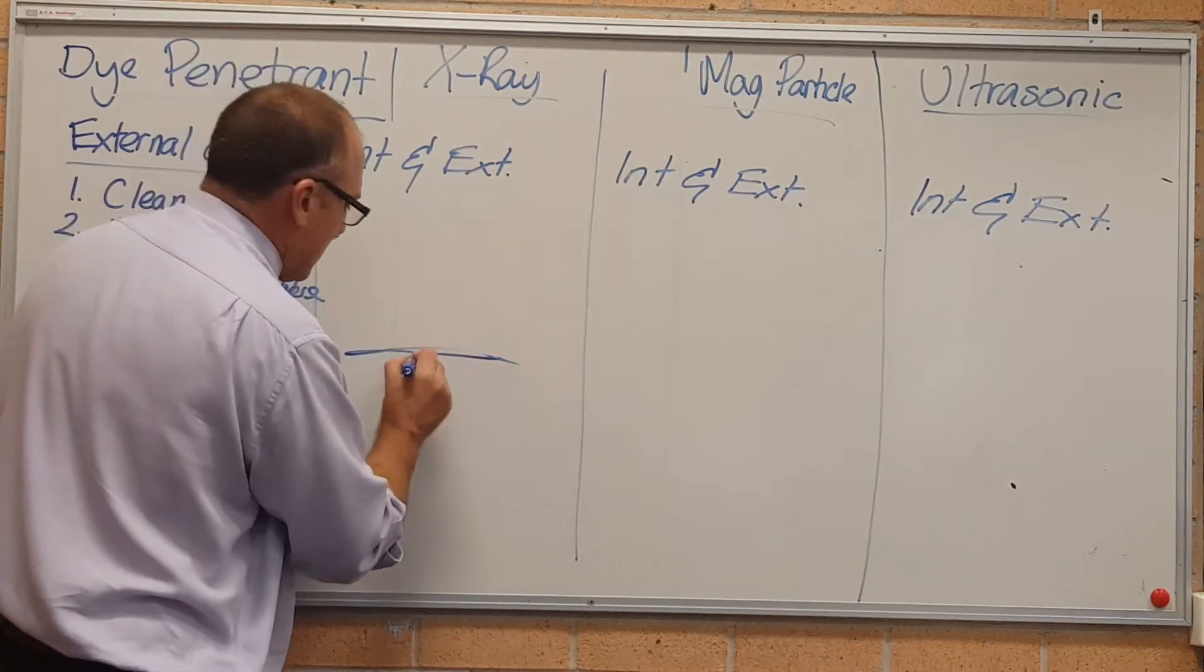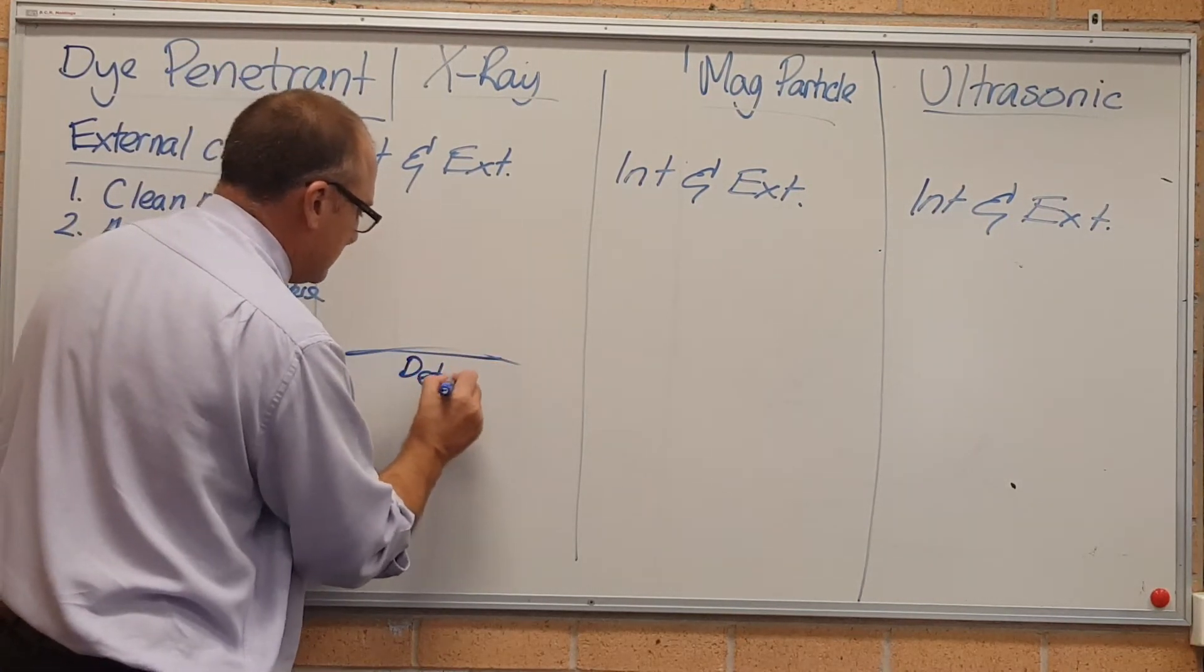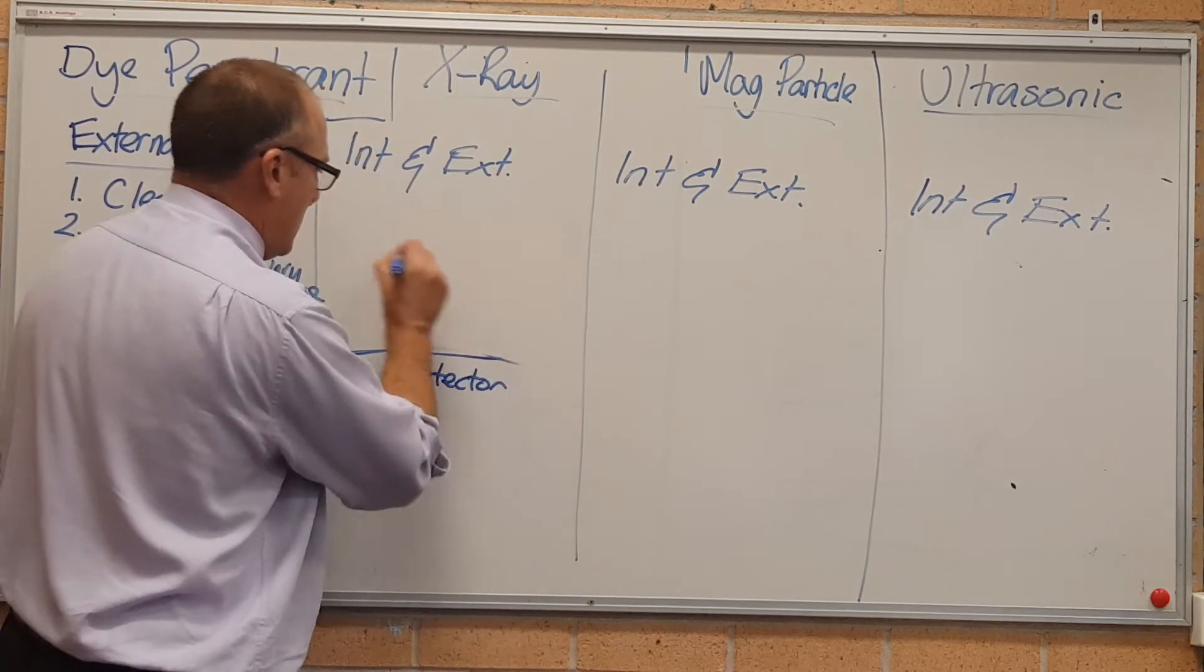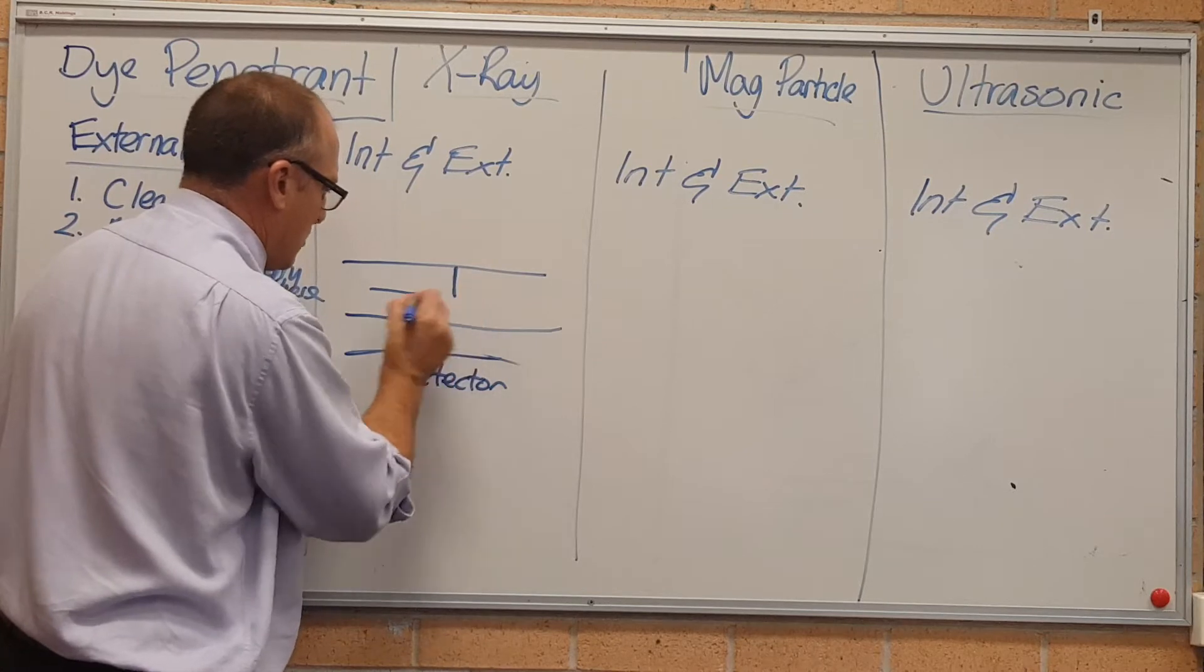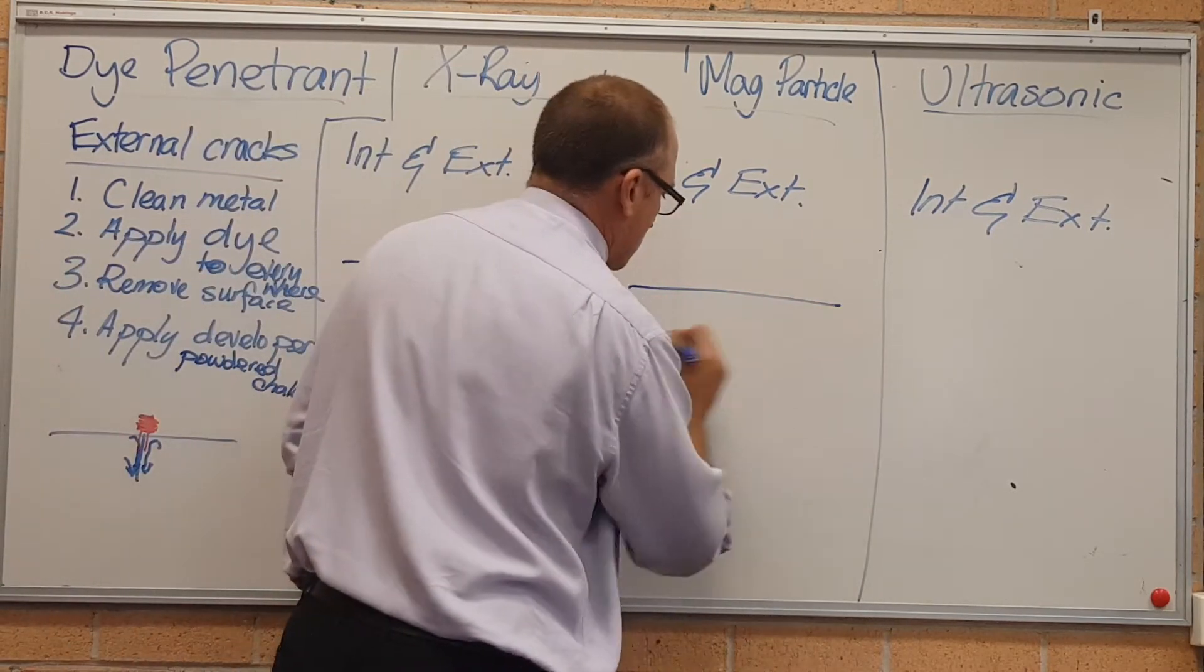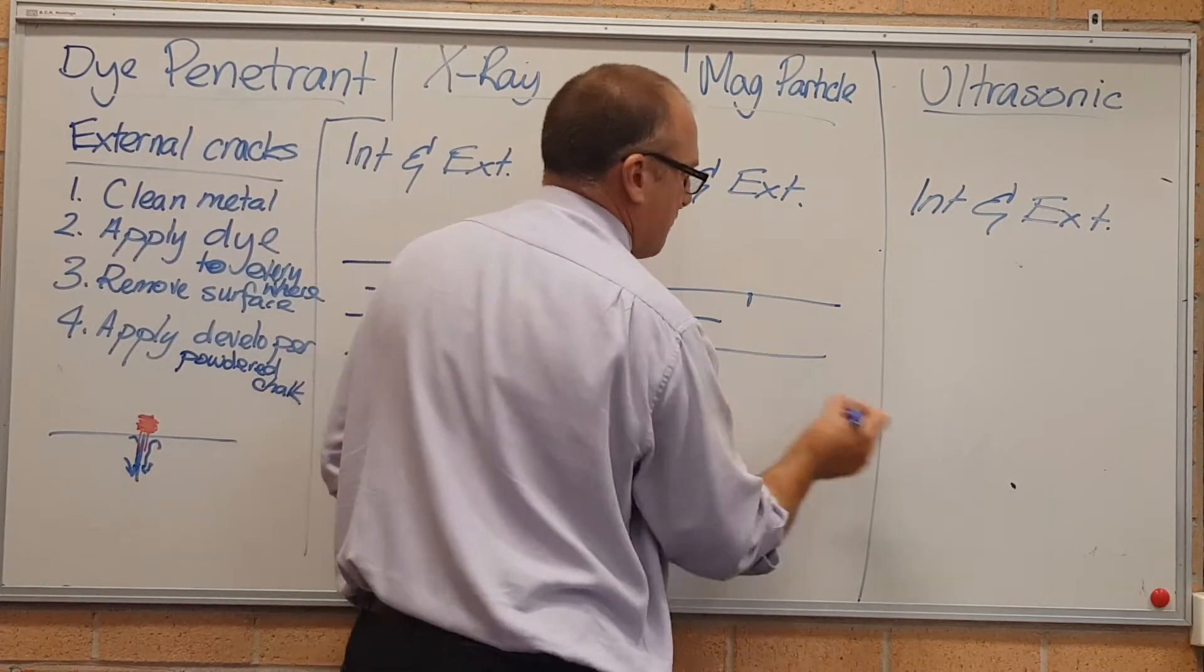So underneath that's the detector, here's the metal. I'm going to put two cracks, one of them's horizontal, one of them's vertical, for each different type of test.